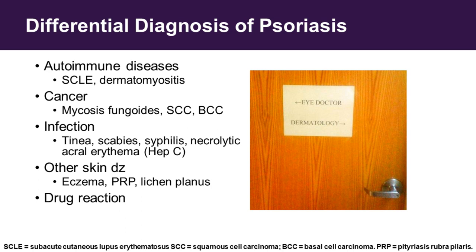There's a differential diagnosis you've got to keep in mind. It could be a connective tissue disease like dermatomyositis or subacute cutaneous lupus. It could be T-cell lymphoma in the skin. Isolated lesions could be squamous cell or basal cell — that's a common referral I get from rheumatology: the patient's joints are great, but they had a stubborn plaque of psoriasis on their arm that's not going away, and it turns out to be a basal cell. Infections like tinea, scabies, syphilis. People with just hands and feet involved could have necrolytic acral erythema caused by hepatitis C, other skin diseases, or most importantly, drug reactions. We don't want to treat psoriasis with biologics if it's being caused by a drug that we can just remove and cure them.